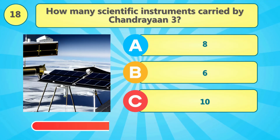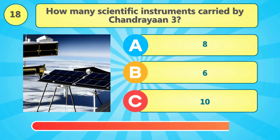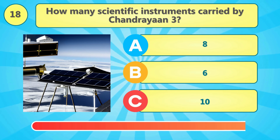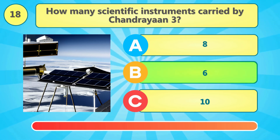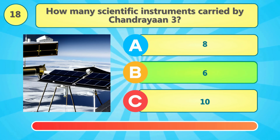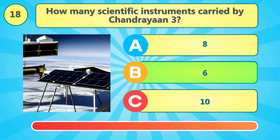What are the specific instruments carried by Chandrayaan 3? The right answer is 6 instruments.